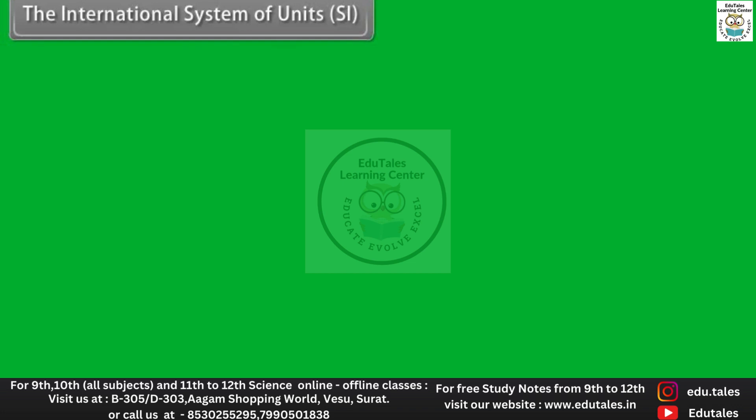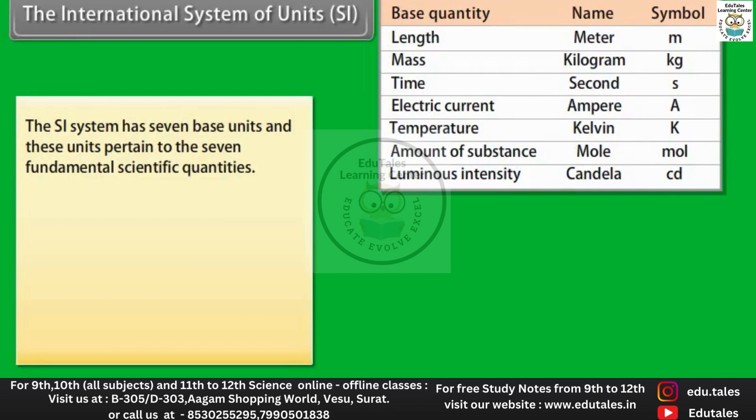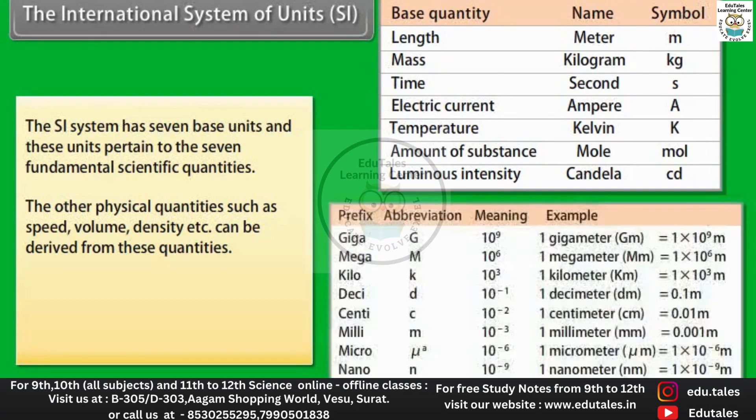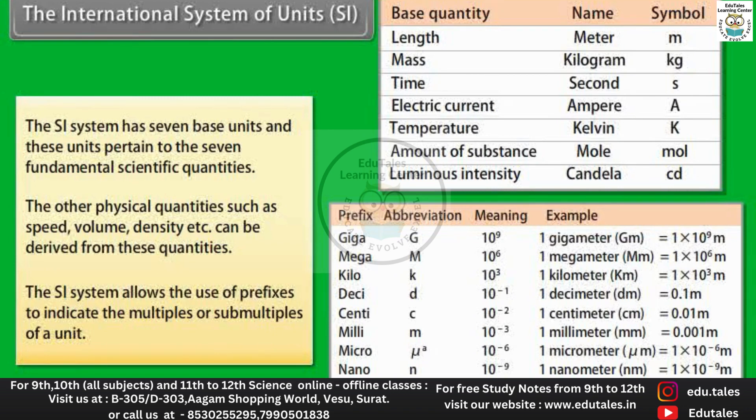The SI system has seven base units and these units pertain to the seven fundamental scientific quantities. The other physical quantities such as speed, volume, density can be derived from these quantities. The definitions of the SI base units are given in table. The SI system allows the use of prefixes to indicate the multiples or sub-multiples of a unit.